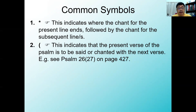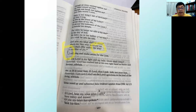The next symbol is a bracket symbol, which indicates that the present verse of the psalm is to be said or chanted with the next verse. Taking the same psalm as an example on page 427, you'll notice there's a bracket there. The bracket tells you that instead of treating the words separately, the entire passage from 'And now my head shall be raised' right up to 'a sacrifice of joy, I will sing and make music for the Lord' is treated as one entire verse. That's what the bracket indicates.